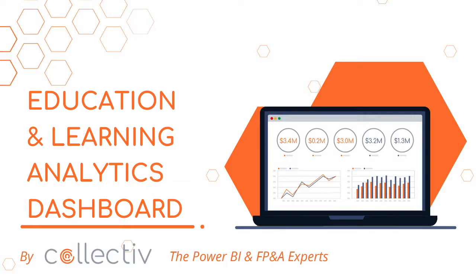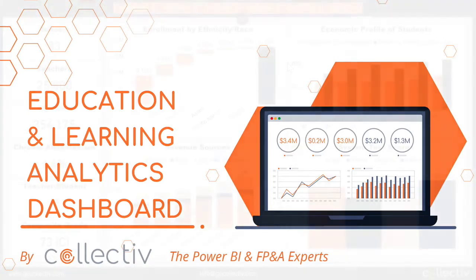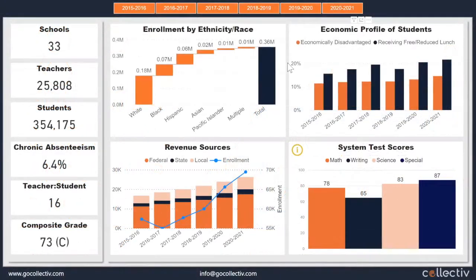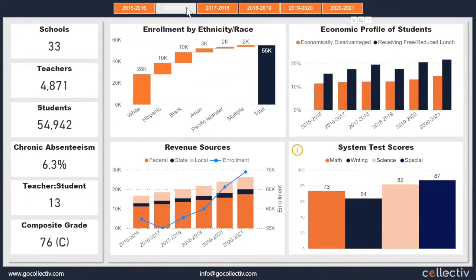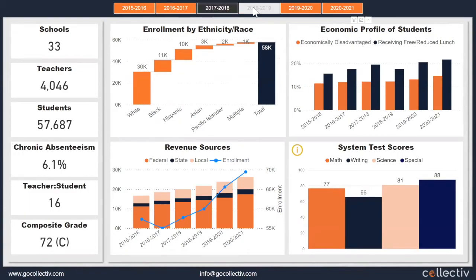This is Collective's Educational Analysis Dashboard, which provides visuals to look at different key metrics broken out by school year. Across the top, the user is able to see how these metrics, like enrollment and economic profile, test scores, change year over year.